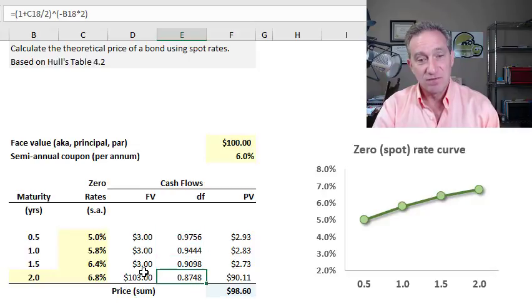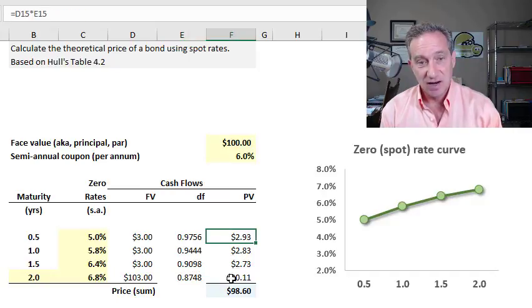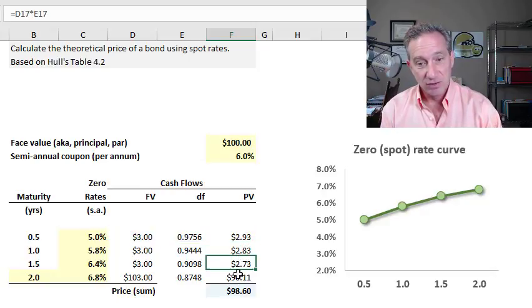But the advantage is I still get to use, I still multiply the same future value by the discount factor, so this simple product is the same, or the formula is the same. However, you can see